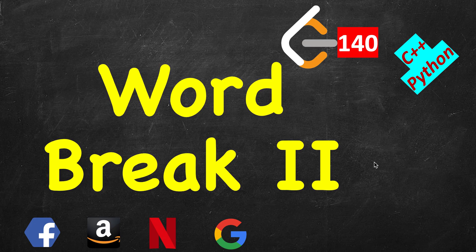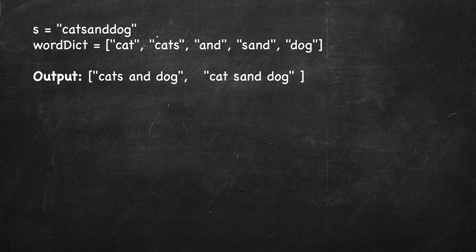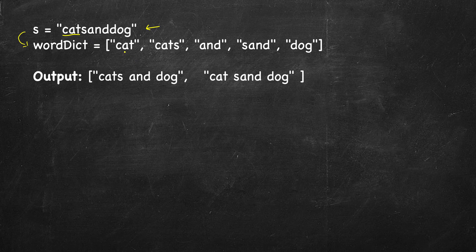In this problem we are given a long string and we have to insert spaces between them. When we insert a space in a string we break them into different words, and those words should be valid. We are also given a dictionary, so those words would be present in the dictionary. In this example, this is the input string with different words but no spaces. You have to insert spaces such that each component is present in the dictionary, and there can be multiple valid ways of doing that. For example, if you insert a space after 'cat' then cat is present, then 'sand' then 'dog'. But 'cats' is also present, so you can take 'cats' as the first word, then 'and', then 'dog'. So both are valid.